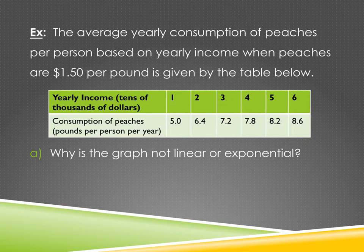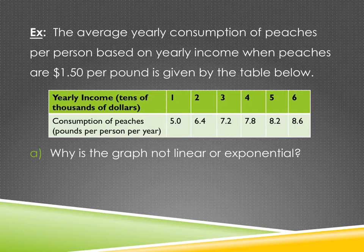Here's an example. The average yearly consumption of peaches per person based on yearly income when peaches are $1.50 per pound is given by the table. The yearly income is in tens of thousands of dollars. So a one represents one times $10,000, so the first entry is somebody who makes $10,000. The second column is somebody who makes $20,000 and so forth. Does it make sense, at least for a while, that if you make more money you're more likely to buy more peaches? Because if I'm only making $10,000 a year, I'm probably not buying peaches, I might be buying something different like bread and milk. For a while, as your income goes up, you're more likely to buy more peaches according to this information.